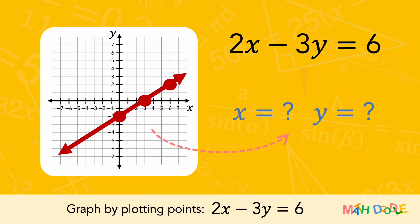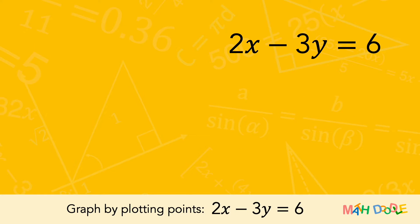So, we are going to find solutions to 2x minus 3y equals 6. But to make it easier to find its solutions, let's first solve the equation for y.